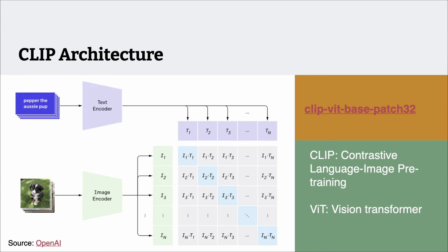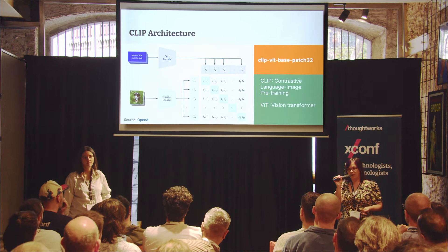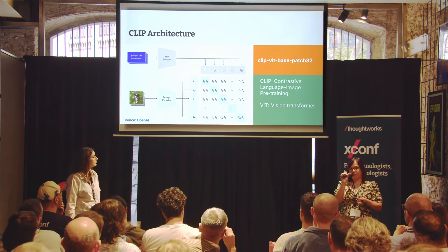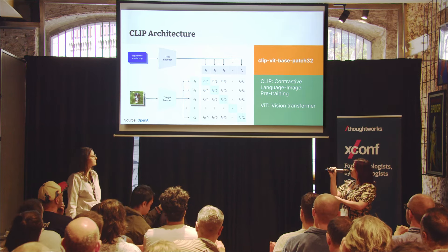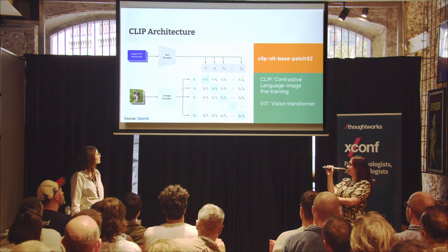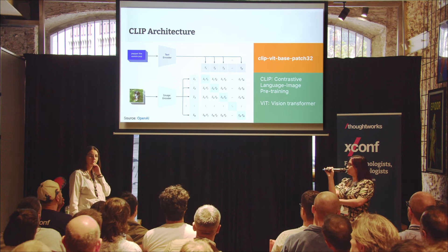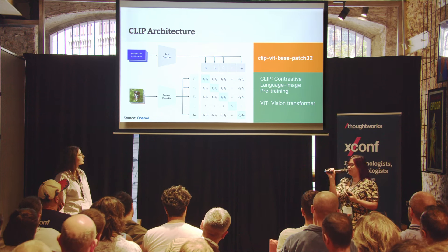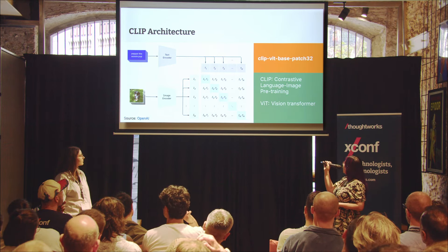Because CLIP is multimodal, it contains both a text and an image encoder. The text encoder has a transformer architecture — the same architecture used by LLMs like GPT. It takes a piece of text, for example 'Pepper the Aussie pup', and converts it into a vector of numbers. The image encoder is ViT, a vision transformer. Instead of processing text, it processes patches of pixels — in this case the patch size is 32. The smaller the patch size, the higher the resolution. Now we've got text and image vectors in the same vector space.